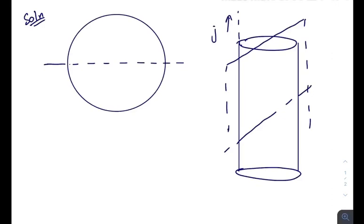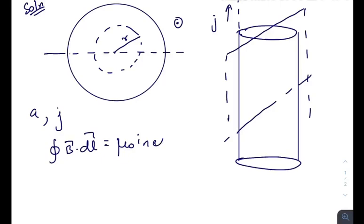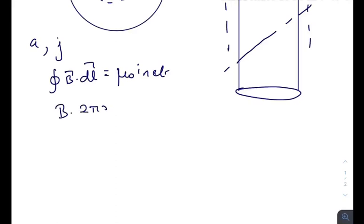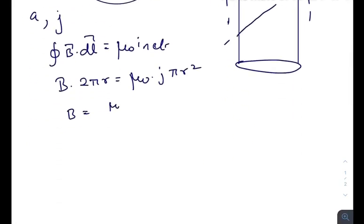The given quantities are the radius, current density j, and the current is coming out of the plane of paper. First, we need to find the magnetic field inside any region. Consider a circular region of radius r, and using Ampere's law we can find the magnetic field at point P. So it will be B · 2πr = μ₀ times current density times area, since i_net is the current enclosed by this Ampere's loop.